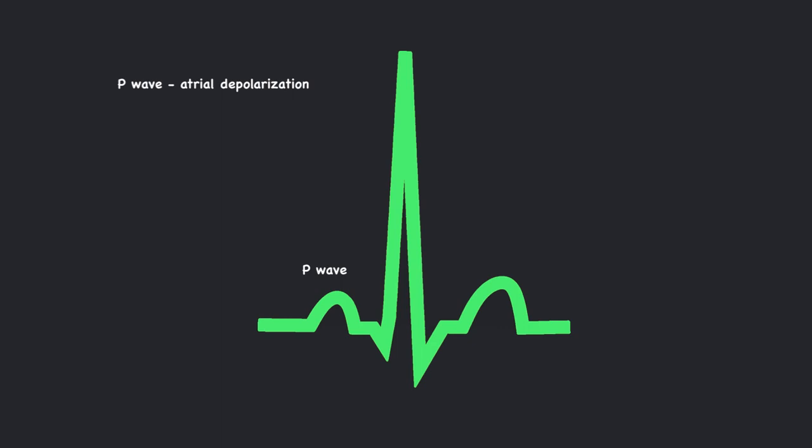The QRS complex, seen next, represents ventricular depolarization, which is the electrical signal that causes the ventricles to contract. It's more significant and complex than the P wave.